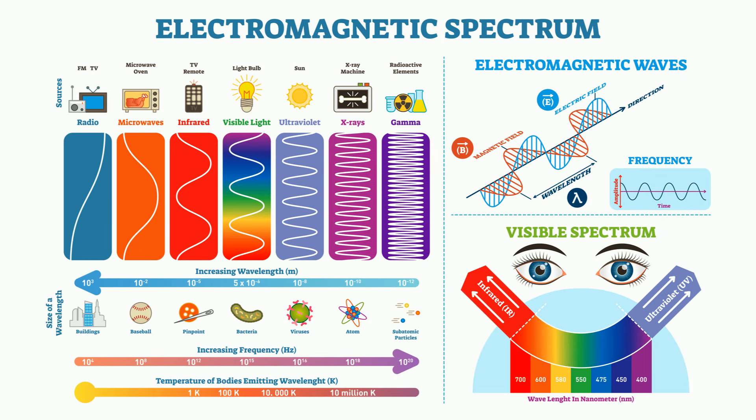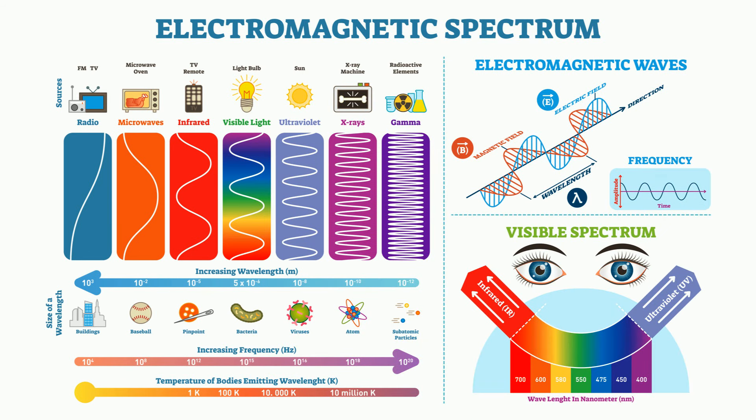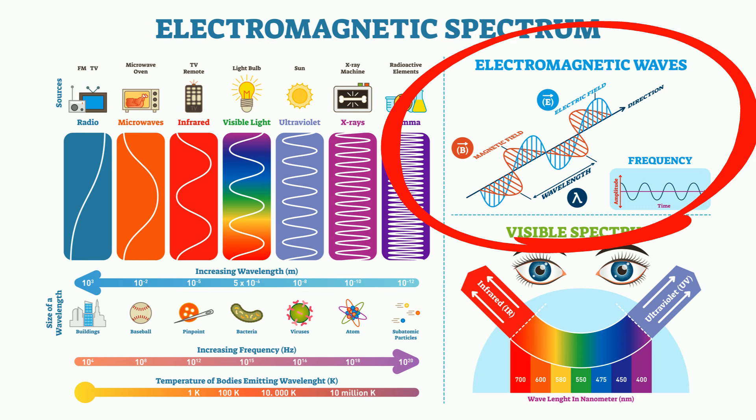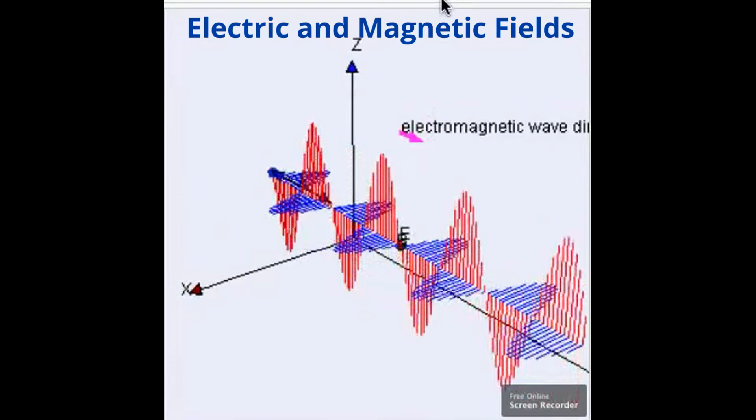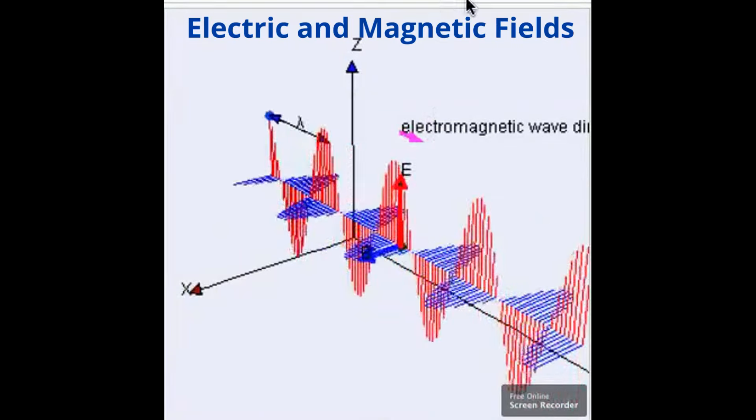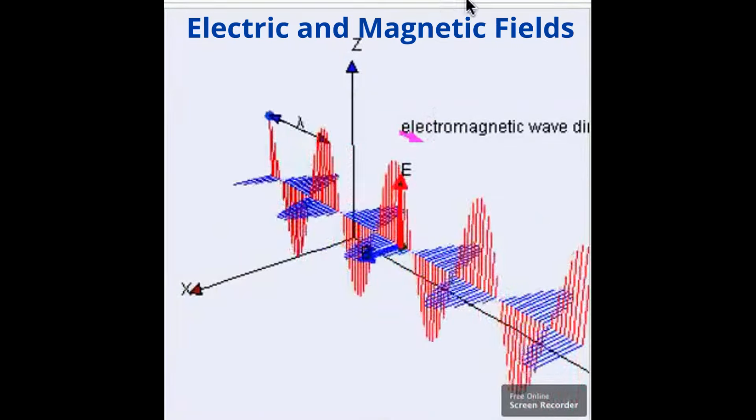The electromagnetic spectrum is composed of EM waves. These are waves that are created as a result of vibrations between an electric field and a magnetic field. In other words, EM waves are composed of oscillating magnetic and electric fields. This is why they are called electromagnetic waves.